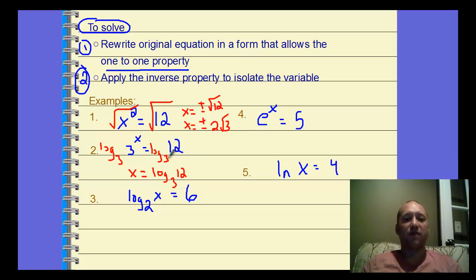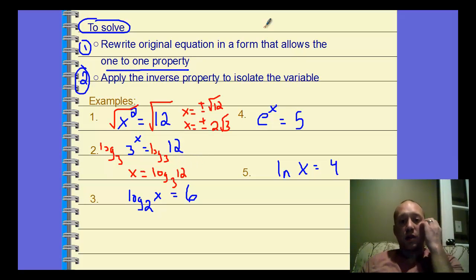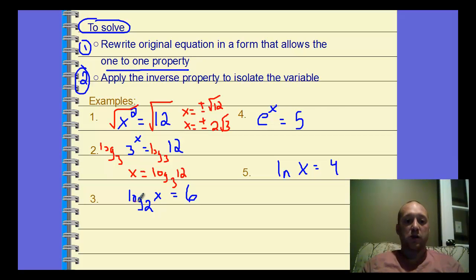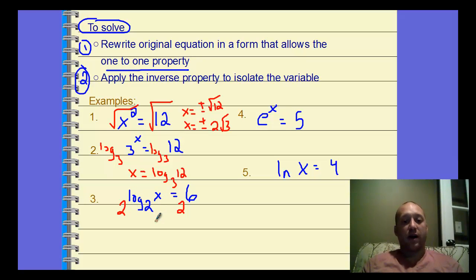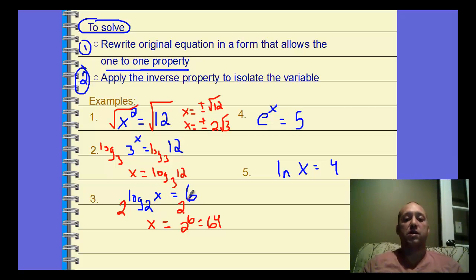The original problem in exponent form, converted to log form, gives the same answer — so we can either use the inverse property or simply change the form. For example 3, starting with a log: log base 2 of x equals 6. The inverse of log base 2 is base 2, so we raise both sides to a power of 2. Two to the power of log base 2 of x equals x, and two to the sixth is 64. So x equals 64. This is equivalent to just converting the log form to exponential form: 2 to the 6th equals x.